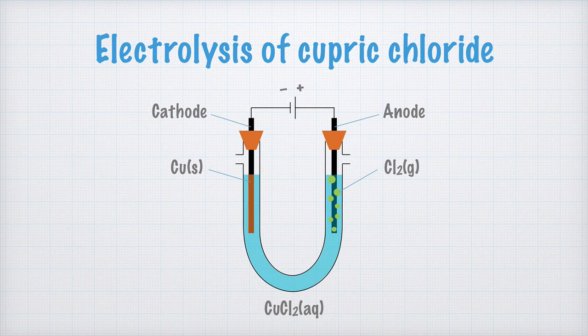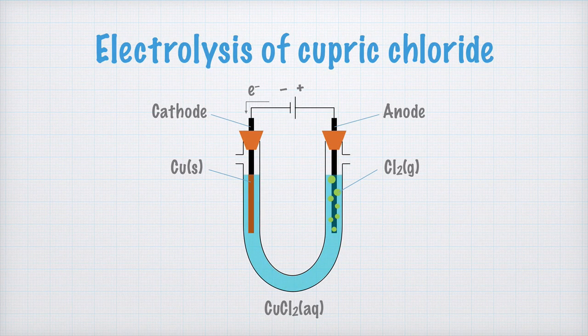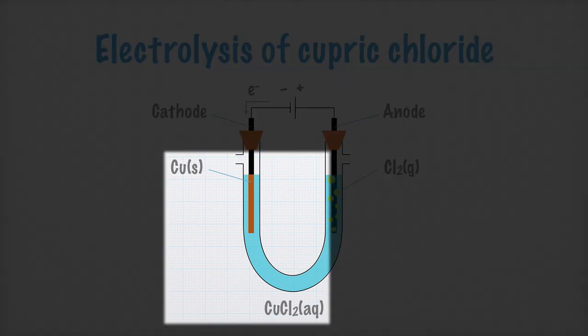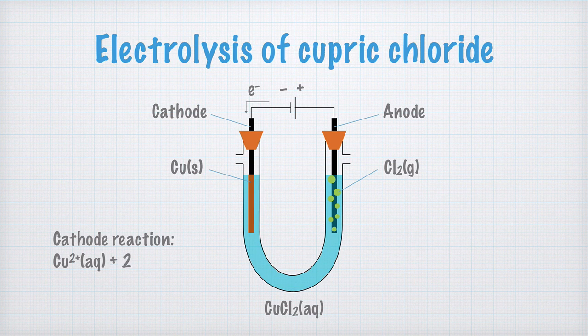Let's look at how the electrons move in this circuit. From the negative pole here, electrons are pushed down into the cathode. In the aqueous cupric chloride, there are free copper ions, and they are reduced to solid copper by the excess of electrons in the cathode. We write the cathode reaction like this. Aqueous copper ions are reduced by two electrons, and form solid copper.